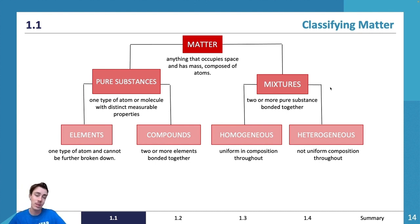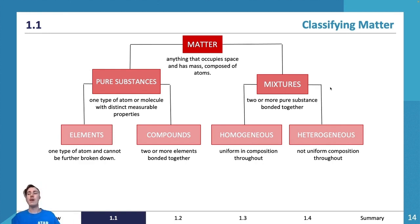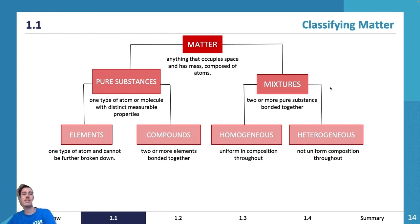Two mixtures that don't mix are often explained by polarity. Polarity is whether something has a slight charge or not. Water is polar; oil and fats are non-polar. If you pour oil into water, you get those blobby bits that never mix in — the oil eventually settles because it's heavier than water. That is a heterogeneous mixture because you've got one substance in one spot and another in a different spot.